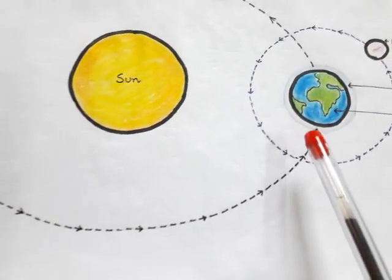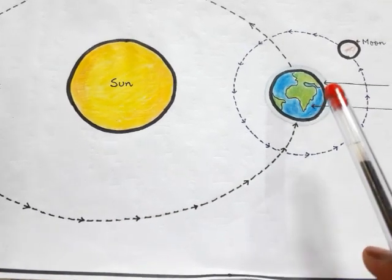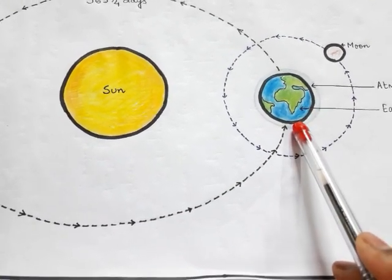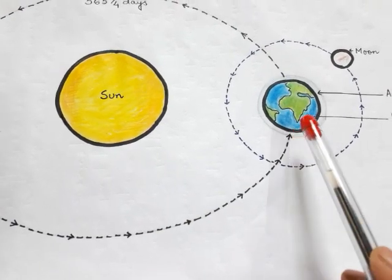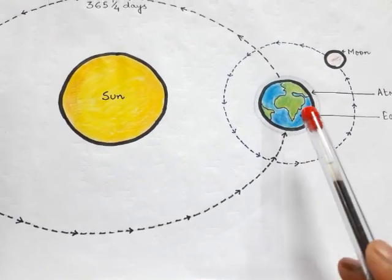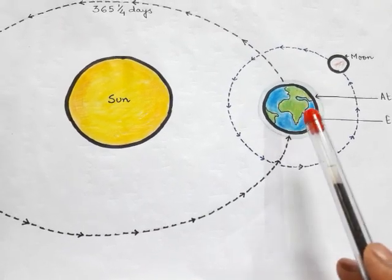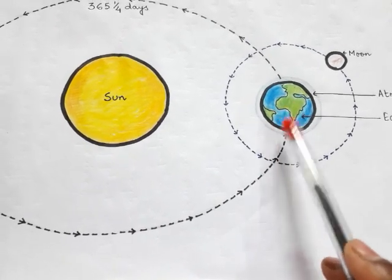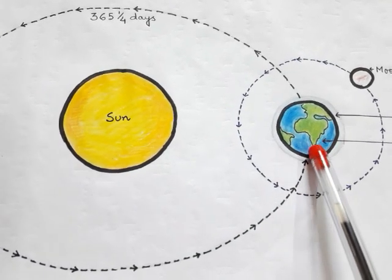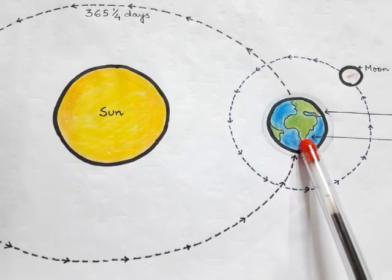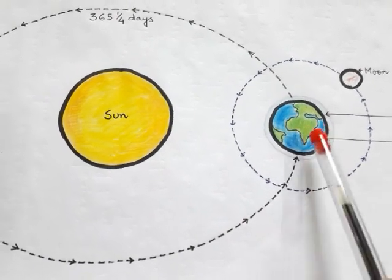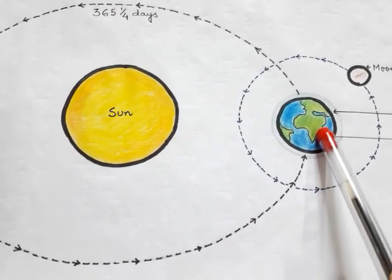When we look at the Earth from space, it appears blue in color. This is because Earth has more water than land, and water supports life on Earth. Earth is the only planet with water and is therefore known as the Blue Planet.